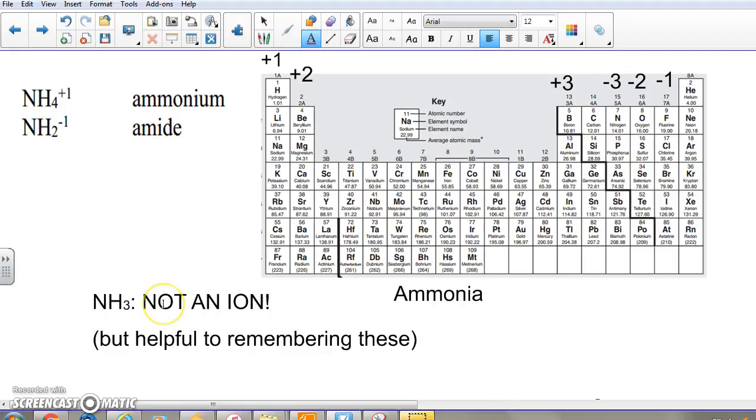NH3 is not an ion and therefore it's not on your ion sheet, but it is helpful if you know what ammonia is, NH3, to remember these ions.